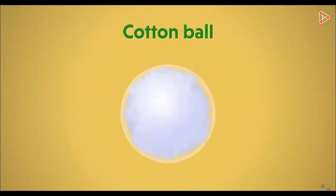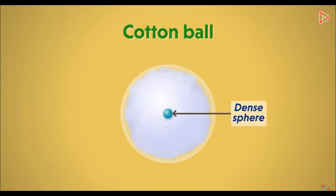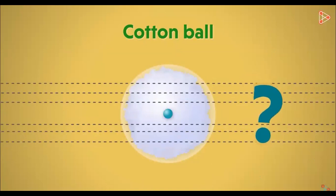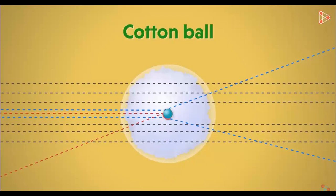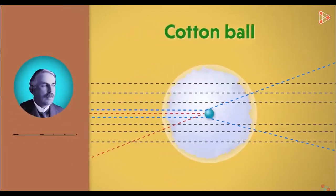Imagine a ball made up of cotton where the cotton is very sparsely distributed and has an extremely tiny, hard, and dense sphere located at the center — so hard it can resist even a bullet. If you shoot many bullets across this cotton ball, most will travel straight through. If a bullet hits the edge of the central heavy mass, it will slightly change path and get deviated. If a bullet hits the center directly, it will bounce back. Only a very few bullets will bounce back. This is analogous to what Rutherford inferred about atomic structure.